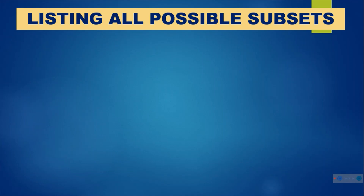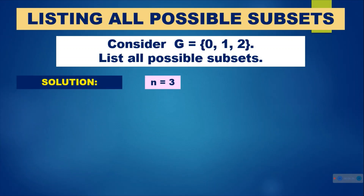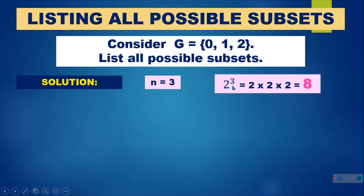Listing all possible subsets. Consider G is equal to {0, 1, 2}. List all possible subsets. Solution: the number of elements is 3, so we compute 2 to the power of 3, meaning 2 times 2 times 2, which equals 8. So this set has 8 subsets.